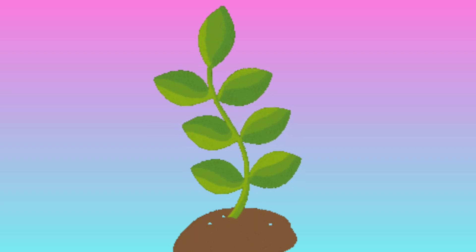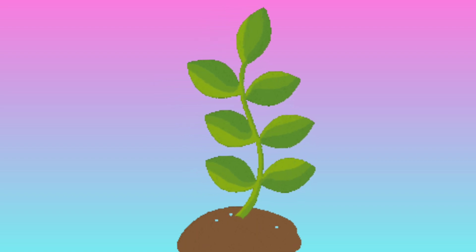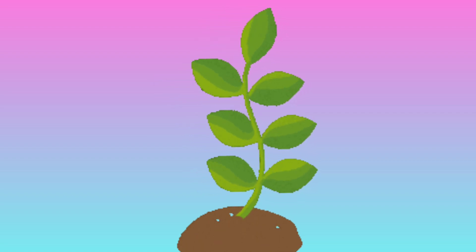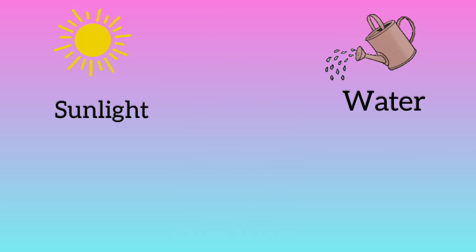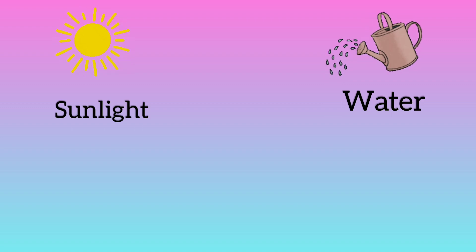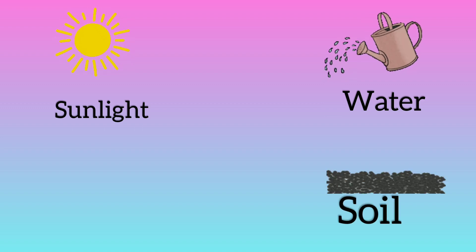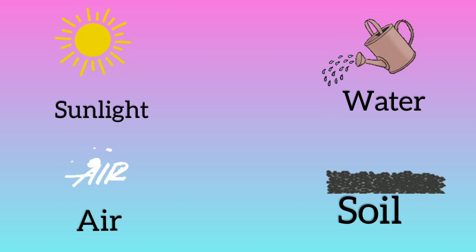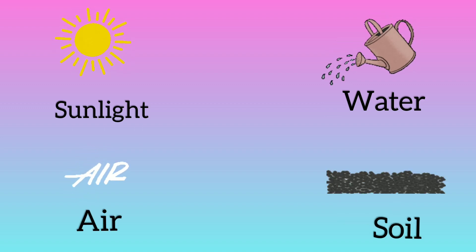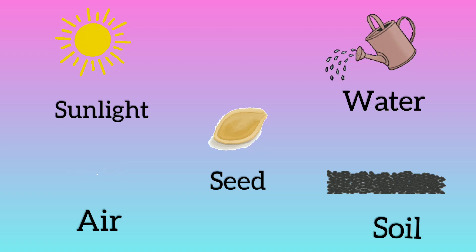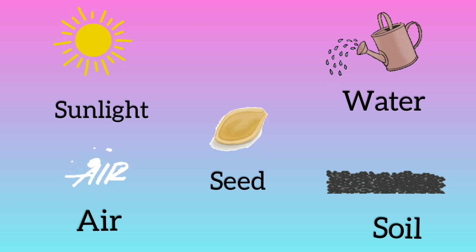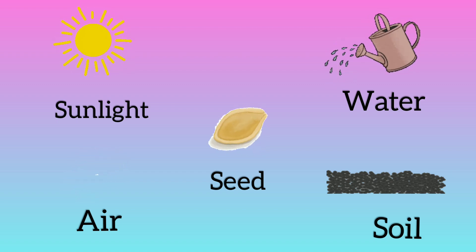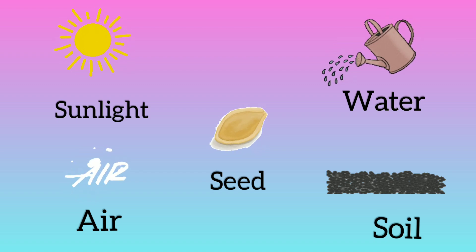Now let's see what things plants need to grow. They need sunlight, water, soil, air and seeds. These all things are very important for plants to grow.